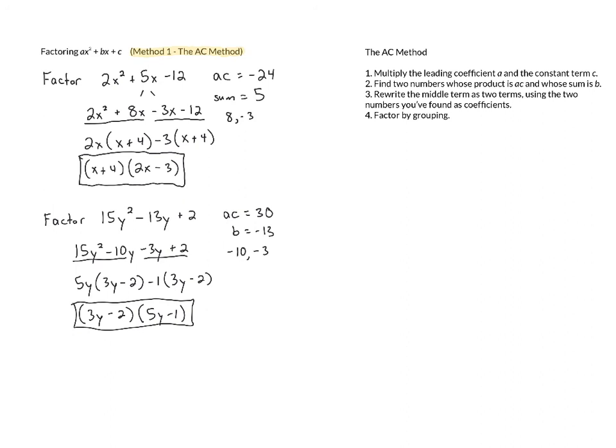Some people don't like the AC method because it seems a little bit abstract. Why are we looking for two numbers with a certain product and a certain sum? And if you're curious about that, you can watch the next video where I explain a little bit about why the AC method works.